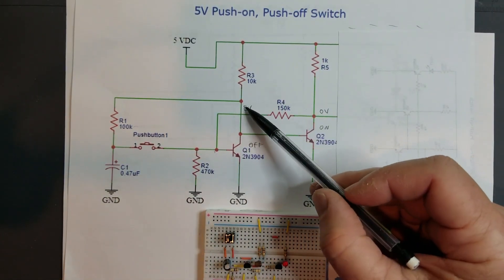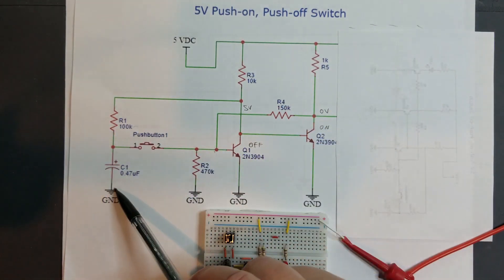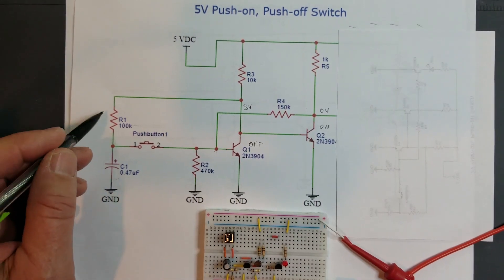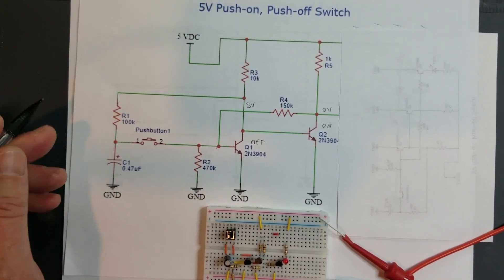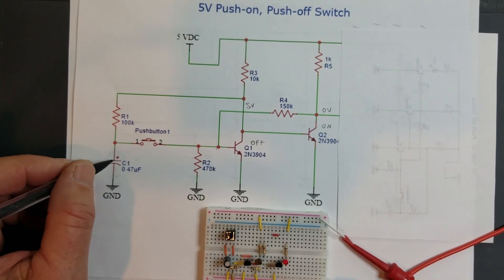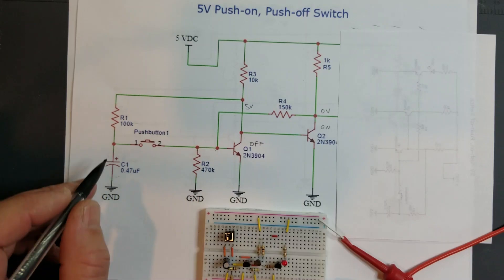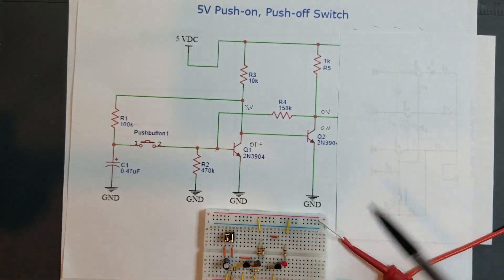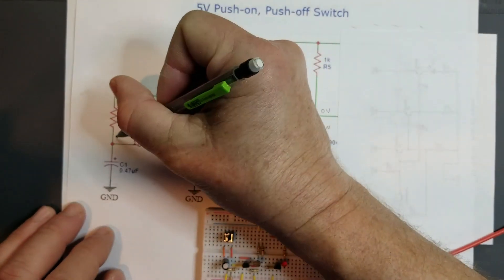If this transistor is off, then this voltage right here is going to be the supply voltage, 5 volts. So if you have 5 volts here, 5 volts is going to be charging this capacitor right here based on this time constant. And that time constant is important in terms of debouncing the push button. So this capacitor is going to charge up to 5 volts.